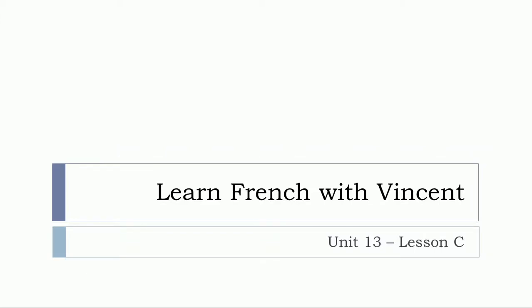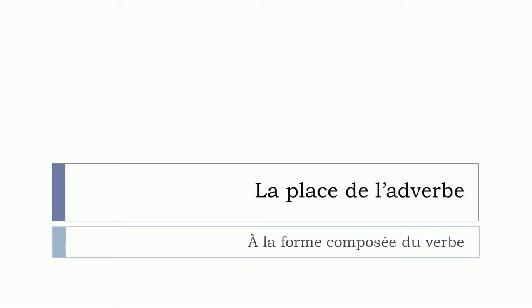Bonjour à tous and welcome to Learn French with Vincent. This is unité 13, leçon C. In this lesson we'll see something quite important — it will be a short lesson but really important. We're talking about la place de l'adverbe, and we will focus on une forme composée de verbes. For instance, passé composé — composed tenses where you've got two parts: first avoir or être, then le participe passé.